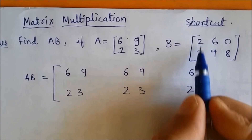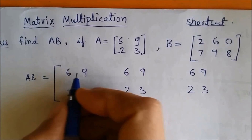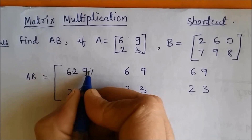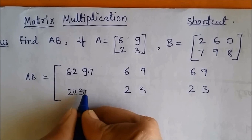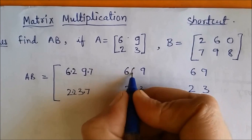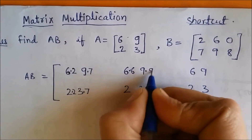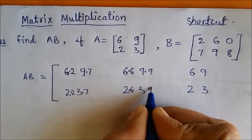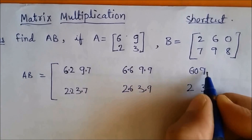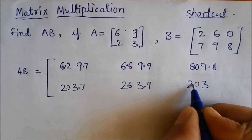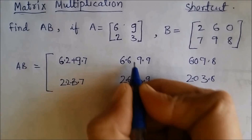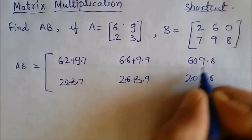Now look at this. The first column of B is 2 and 7, so I will write 2, 7 — then again 2, 7 — then 2, 7. The second column is 6 and 9, so I write 6, 9 — 6, 9 — 6, 9. Then it is 0 and 8 — 0, 8 — 0, 8. I will put a plus sign in between each pair.